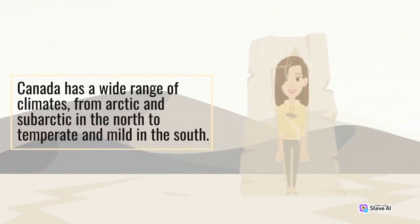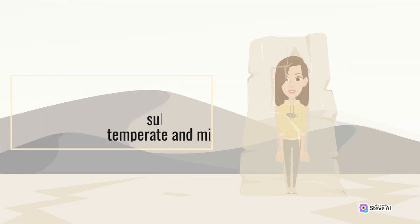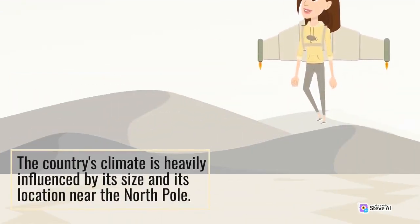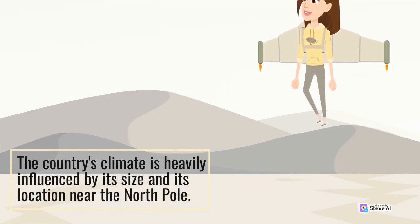Canada has a wide range of climates, from arctic and subarctic in the north to temperate and mild in the south. The country's climate is heavily influenced by its size and its location near the North Pole.